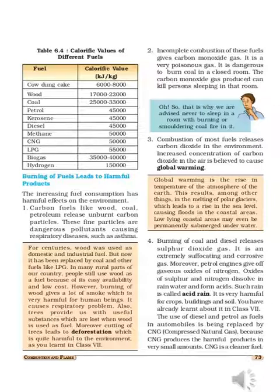So what are the results of global warming? Global warming is the rise in temperature of the atmosphere of the earth. The normal temperature of the earth ranges from minus 50 degrees to 50 degrees Celsius.